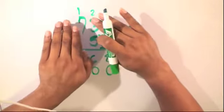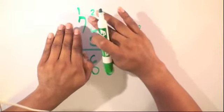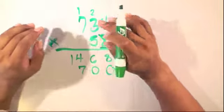Next, we have 7 times 5, which is equal to 35. And add the 1, we have 36.